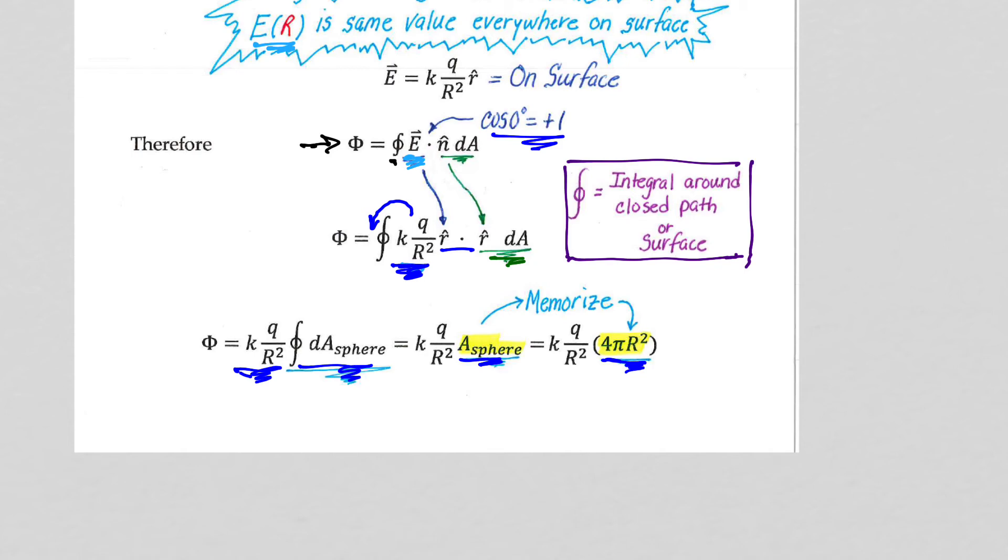There we have our flux through that theoretical construct sphere, and notice we're going to address very quickly now the fact that we lose the r squareds. We're going to pick this up on our next page of notes, so remember this solution, kq for pi, the r squareds cancel out, and let's see the significance of that.